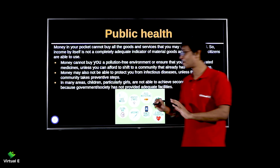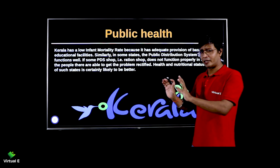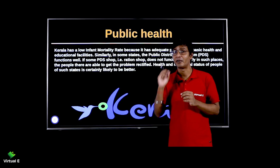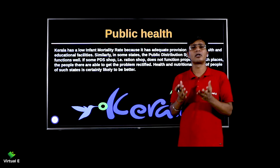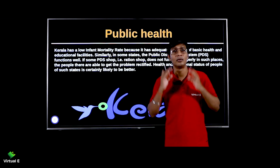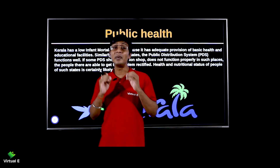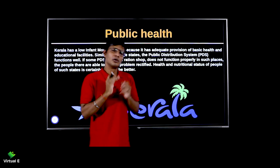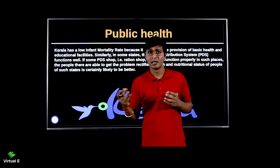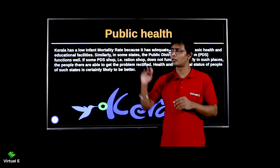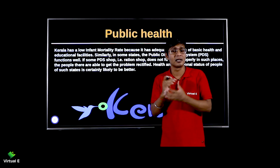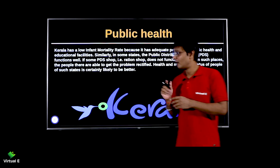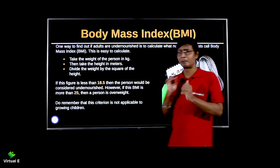Take the example of Kerala — it has a low infant mortality rate because its primary health sector is doing very well. Similarly, there are states where the PDS — Public Distribution System — is working well. When ration shops open regularly, people in the low income bracket can purchase goods and services, and development happens.